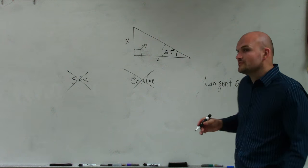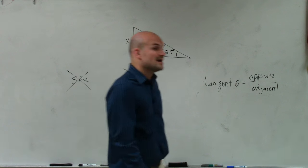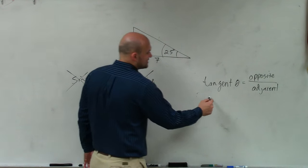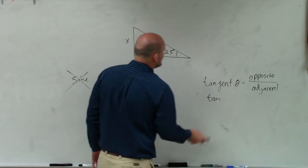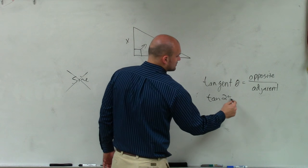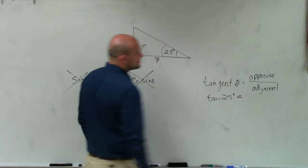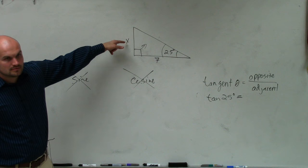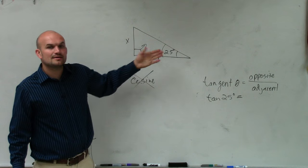So in this problem, we're actually going to solve. The way we write this is the tangent of the angle 25 degrees, and that's equal to what is the opposite side? x. What is my adjacent side? 7.